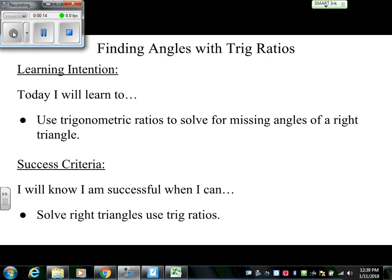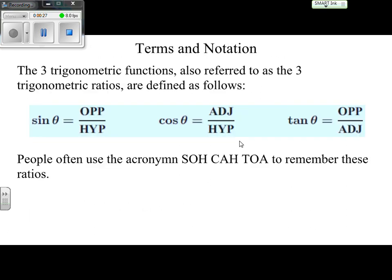In our previous video we had found missing sides using trig ratios or trig functions. Our learning intention is that we will learn to use trigonometric ratios to solve for missing angles of a right triangle, and we will know we are successful when we can solve right triangles using trig ratios.